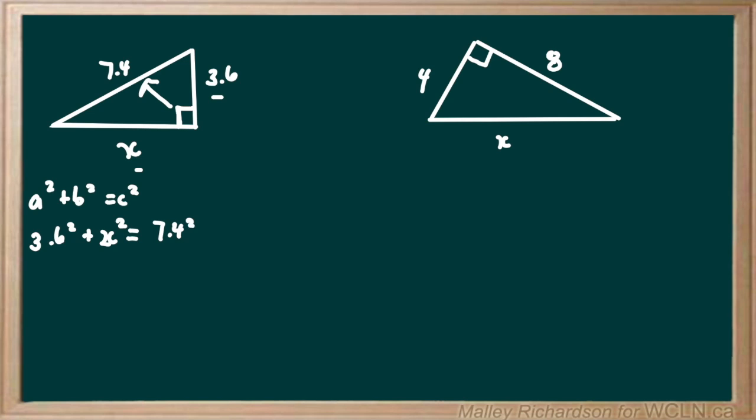Now 3.6 squared is the same as 3.6 times 3.6, so we get 12.96 plus x squared equals 7.4 times 7.4, which is 57.76. We subtract 12.96 from both sides and we're left with x squared equals 44.8.